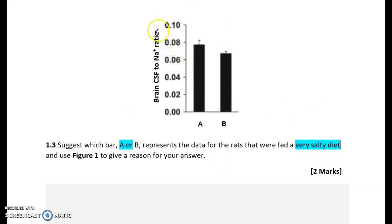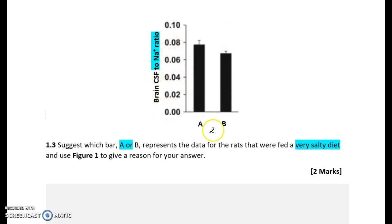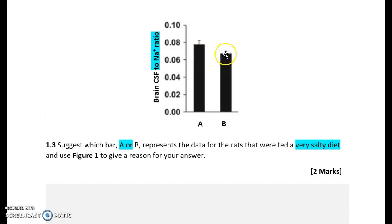To interpret this question, you need to understand the ratio scale. Because it's a ratio, all values are relative to one. A has an approximate value of about 0.082 and B has 0.072. So A has more cerebrospinal fluid compared to B, because it has more of the fluid relative to the sodium ions.